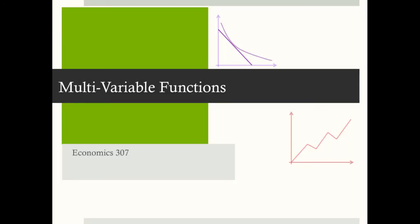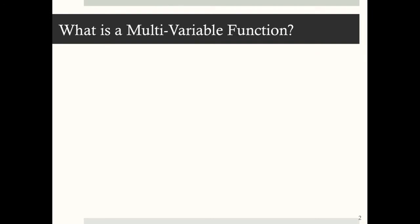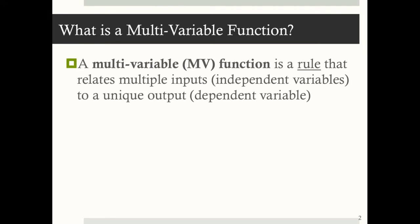Multivariable functions. A multivariable function, or mv function, is a rule that relates multiple inputs — multiple independent variables — to a unique output, the dependent variable.